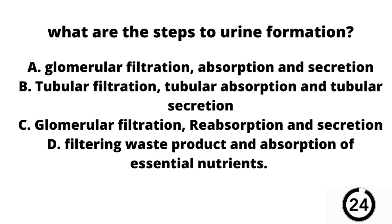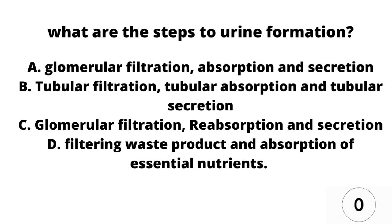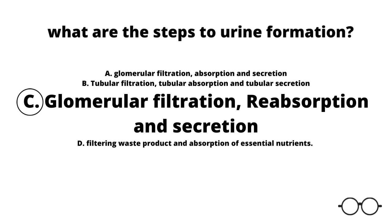Question number 12. What are the steps to urine formation? A glomerular filtration, absorption, and secretion. B tubular filtration, tubular absorption, and tubular secretion. C glomerular filtration, reabsorption, and secretion. Or D filtering waste product and absorption of essential nutrients. Our answer here is C — glomerular filtration, reabsorption, and secretion. Also make note that it is reabsorption, not absorption. Absorption happens in our gastrointestinal system, and reabsorption happens in our kidneys.